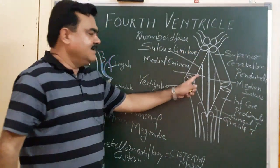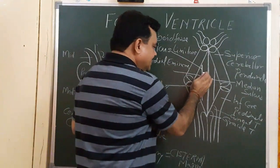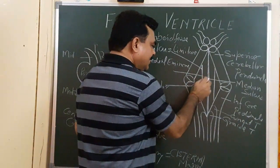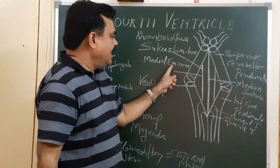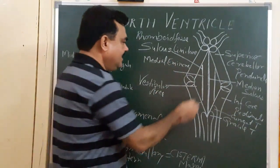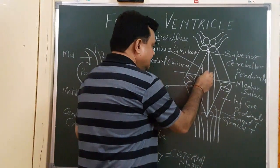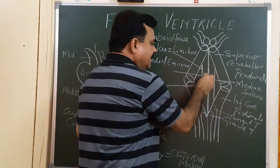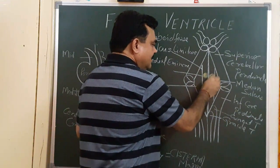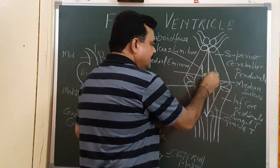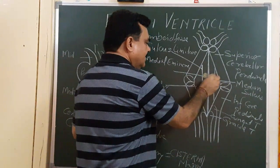Just medial to the sulcus limitans, in the medial eminence region, there is a bulging or elevation present in the region of the pons.